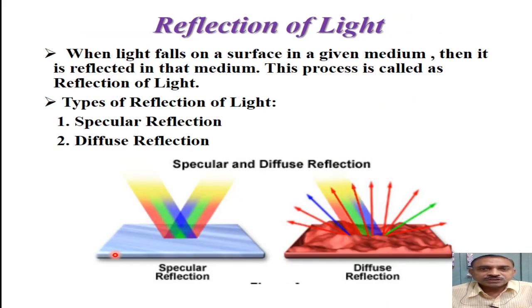Now the reflection of light. It is defined as when light falls on a surface in a given medium, then it is reflected in that medium. This process is called as reflection of light.